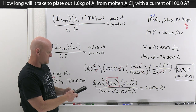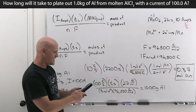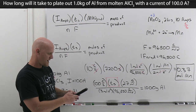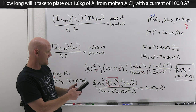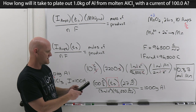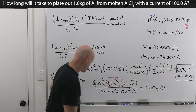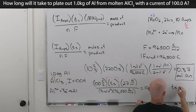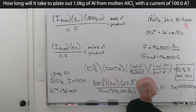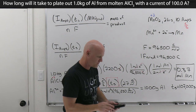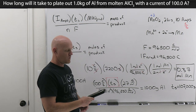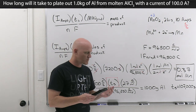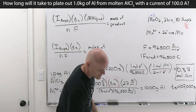Solving for t: 1,000 × 3 × 96,500 ÷ (100 × 27) = 107,222 seconds, which rounds to about 107,000 seconds. Converting: divide by 60 gives 1,787 minutes; divide by another 60 gives about 29.78 hours; divide by 24 for days, and so on.